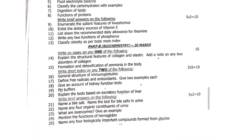Next, Biochemistry — 13 marks. Fourteenth question: explain the structural features of collagen and elastin, add a note on any two disorders of collagen. Fifteenth question: formation and detoxification of ammonia in the body. Out of these two, answer any one — 10 marks. Write short notes on any two: sixteenth question — general structure of immunoglobulins. Seventeenth question: free radicals and antioxidants, give two examples for each. Eighteenth question: give an account of kidney function test. Nineteenth question: pH buffers. Twentieth question: explain the test based on excretory function of liver. Brief answers: 21st — name a bile source and the test for bile source in urine. 22nd — name any four organic constituents of urine. 23rd — what are isoenzymes, give an example. 24th — mention the functions of hemoglobin. Name any four biologically important compounds formed from glycine.